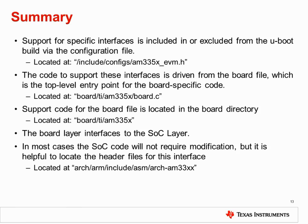In summary, support for specific interfaces is included in or excluded from the uBoot build via the configuration file, located at include/configs/am335x_evm.h. The code to support these interfaces is driven from the board file, which is the top-level entry point for board-specific code, located at board/ti/am335x/board.c. Support code for the board file is located in board/ti/am335x. The board layer interfaces to the SoC layer; in most cases the SoC code will not require modification, but the header files for this interface are at arch/arm/include/asm/arch-am33xx.